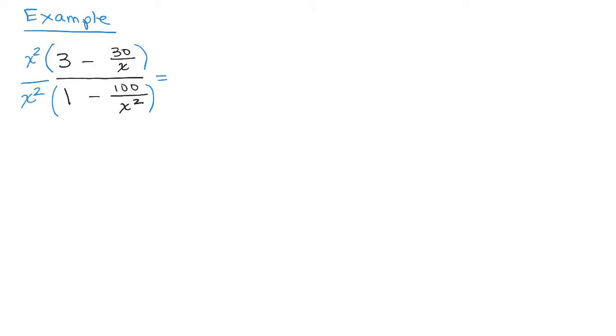So we have X squared times 3, which is 3X squared. It's going to be nothing to cancel there because it wasn't a fraction. The 3 was a whole number. And then we have minus X squared times 30 over X.